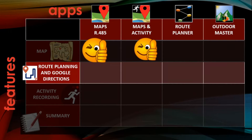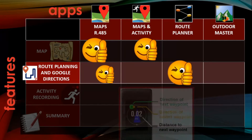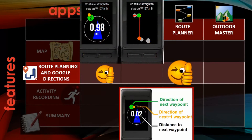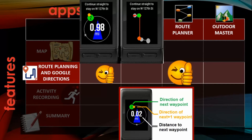When we consider route planning, the best apps are Maps R485 and the Route Planner. They can request directions from Google directly from the watch menu. If you prefer to plan the route on your mobile, both of them have an Android companion app.